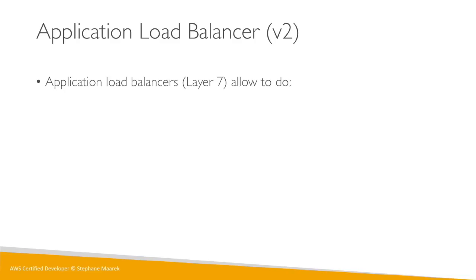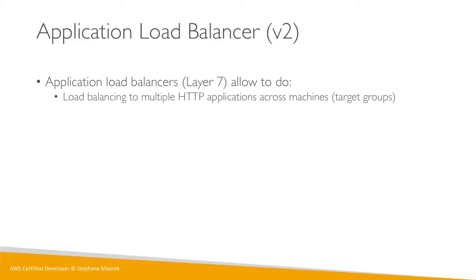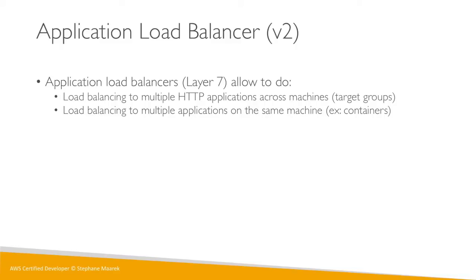Application Load Balancers are v2 and operate at Layer 7, because they work at the HTTP level. They allow you to handle multiple HTTP applications across machines, grouping them into target groups. You can also load balance to multiple applications on the same machine — that's containers. This is a common exam question: if you need to load balance across the same application running on the same machine, the answer is an Application Load Balancer.